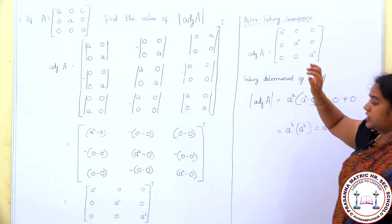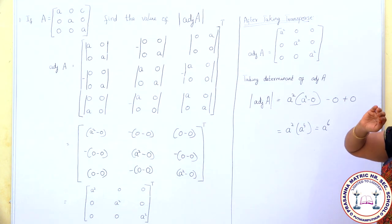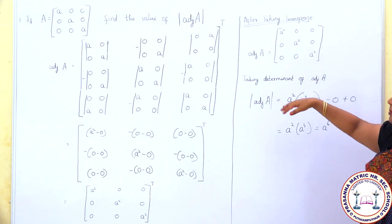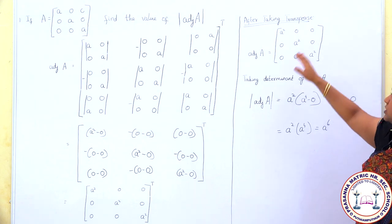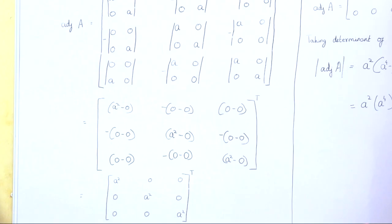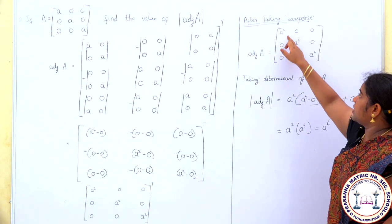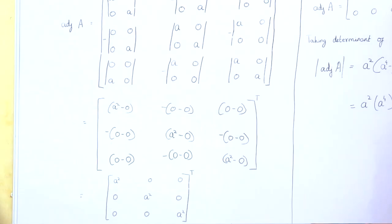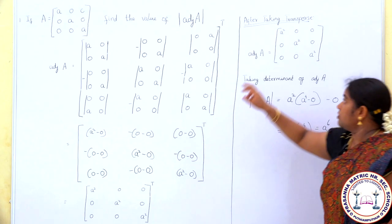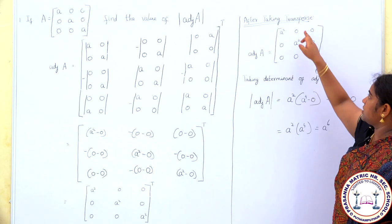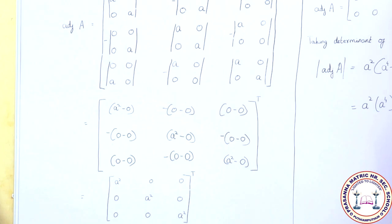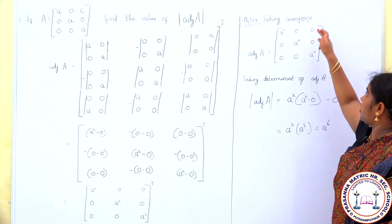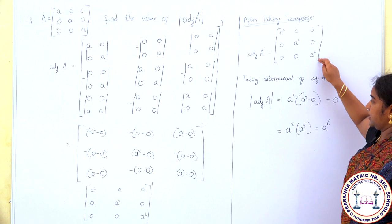The transpose is nothing but converting rows into columns and columns into rows. So the row A², 0, 0 becomes the column A², 0, 0. The row 0, A², 0 becomes 0, A², 0, and the row 0, 0, A² becomes the column 0, 0, A². Since it is a diagonal matrix, the adjoint equals the cofactor matrix.